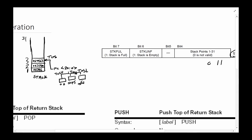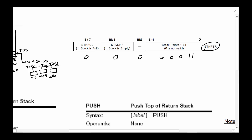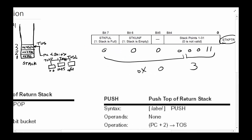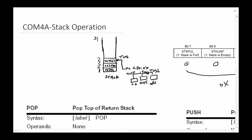The stack pointer value represents which level the stack is at — bits zero to four. The bits also indicate empty and full status. If the stack is empty, that bit is a one; since it's not empty and has three items in it, that bit is zero. If it's not full — if all 31 slots were filled you'd have a one — since it's not full, the stack pointer value in hex would be 0x03.